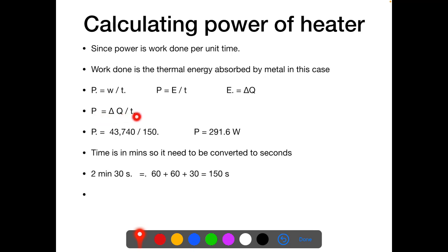So power is ΔQ over ΔT. ΔQ as we found was 43,740 divided by T. Now just focus here. The time was given in minutes: 2 minutes and 30 seconds. We have converted time into seconds. You can see here, in 2 minutes there are 120 seconds plus 30 seconds, a total of 150 seconds. We are going to plug in the value for time over here, and by dividing this we get 291.6 watts.